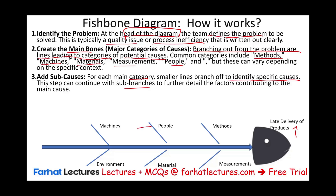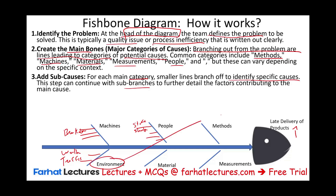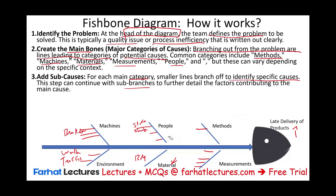For example, if we look at staff, we would say we have a staff shortage, and we could identify other sub-causes for staff. For machines, one of the problems could be breakdown, or we may need to upgrade our machines. For external factors — environment — one factor could be the weather, another could be traffic. For material, we could say we are using inferior raw material, or there are issues with suppliers. For each major cause, find sub-causes.